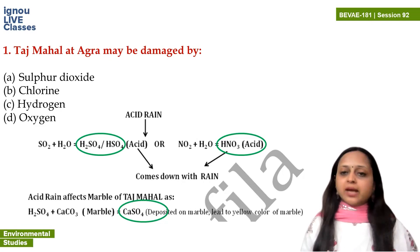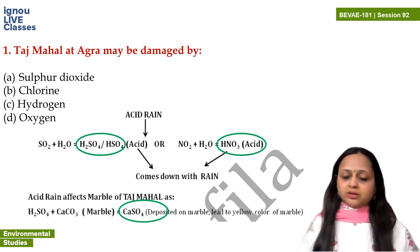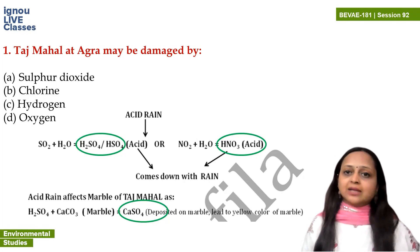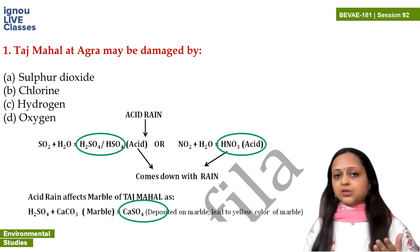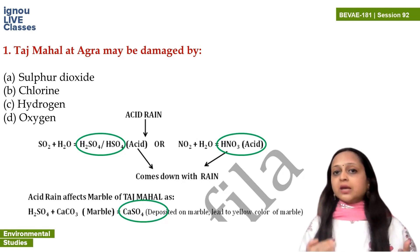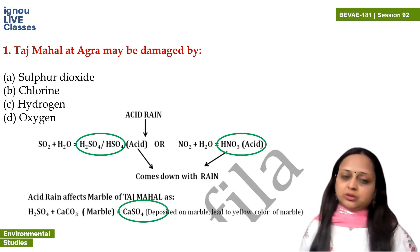Sulfur dioxide and nitrogen dioxide, they combine with water — which is rainwater — and what do they make? Acids. Either sulfuric acid or nitric acid. You can see a picture on screen — here I have written SO2 + H2O, which gives acid. They come down with rain, so we call it acid rain.